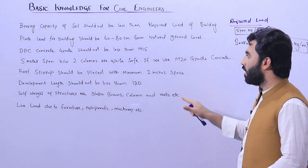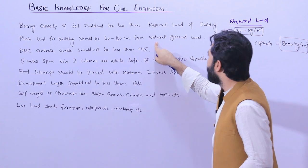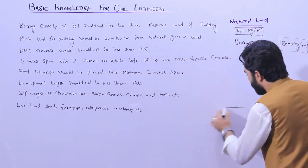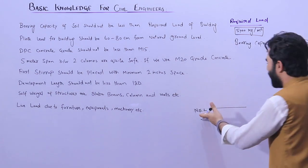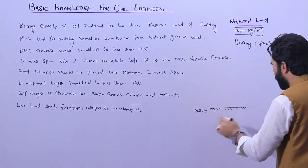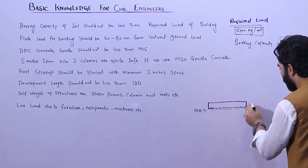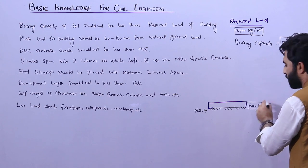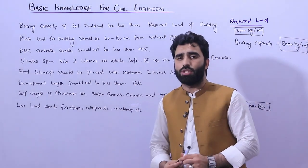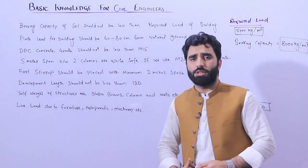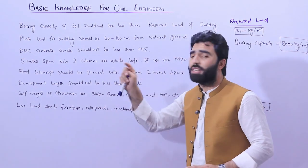The next topic is plinth level. The plinth level for a building should be 60 to 80 centimeters from the natural ground level (NGL or natural surface level). When you want to construct a building, the plinth level should be a minimum of 60 to 80 centimeters above ground level. It should not be equal to the ground level, otherwise you will face problems, whether it is a commercial or residential building. You can increase it, but it should not be less than this.